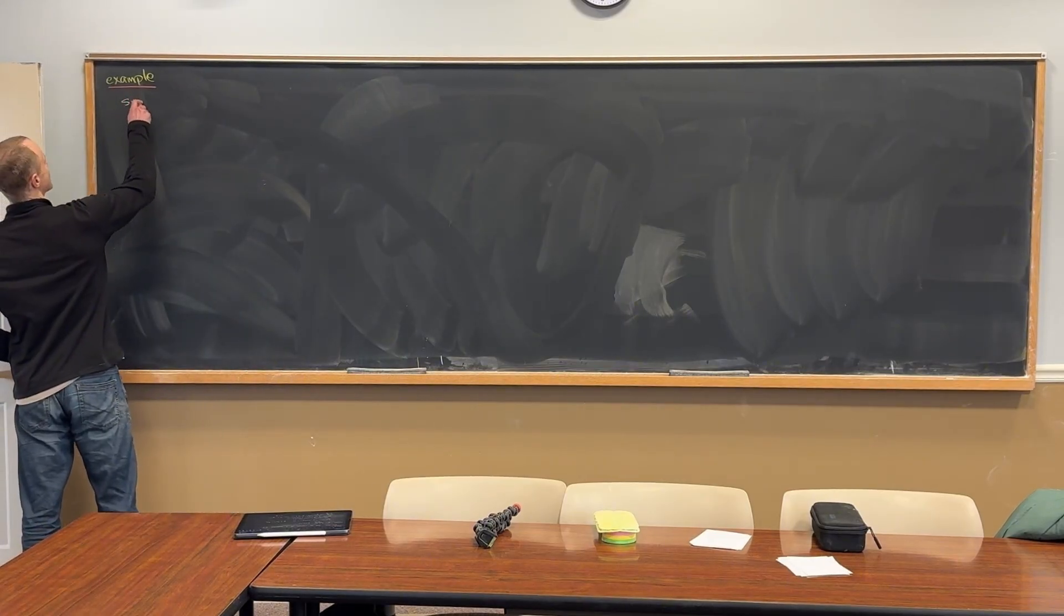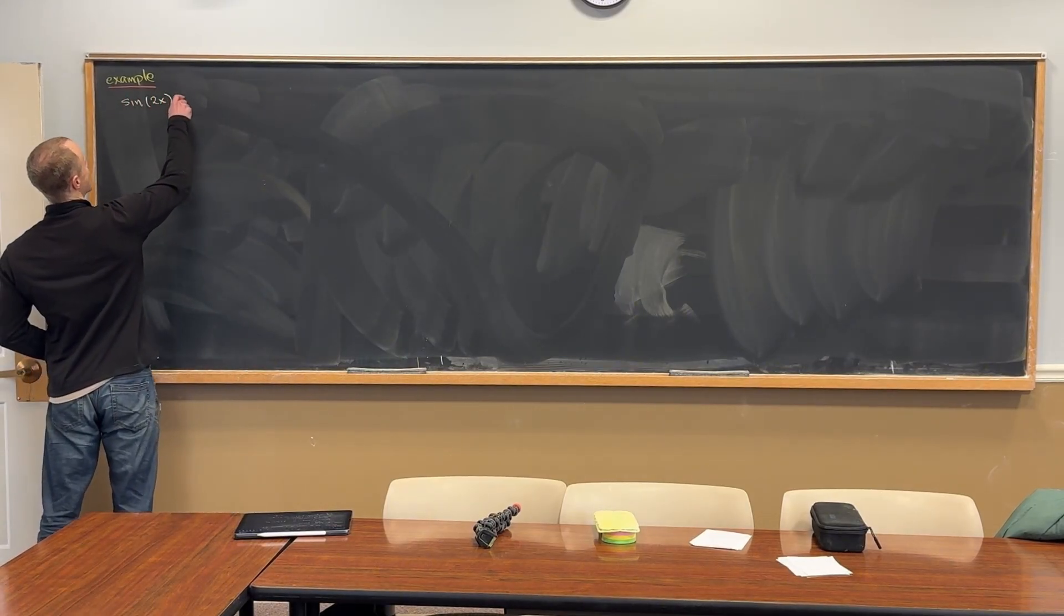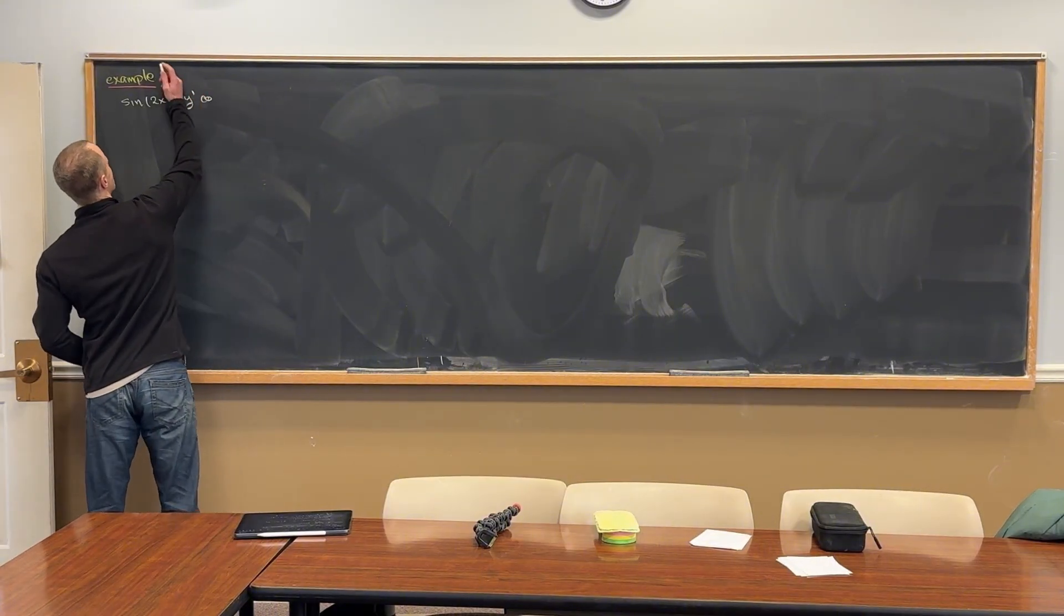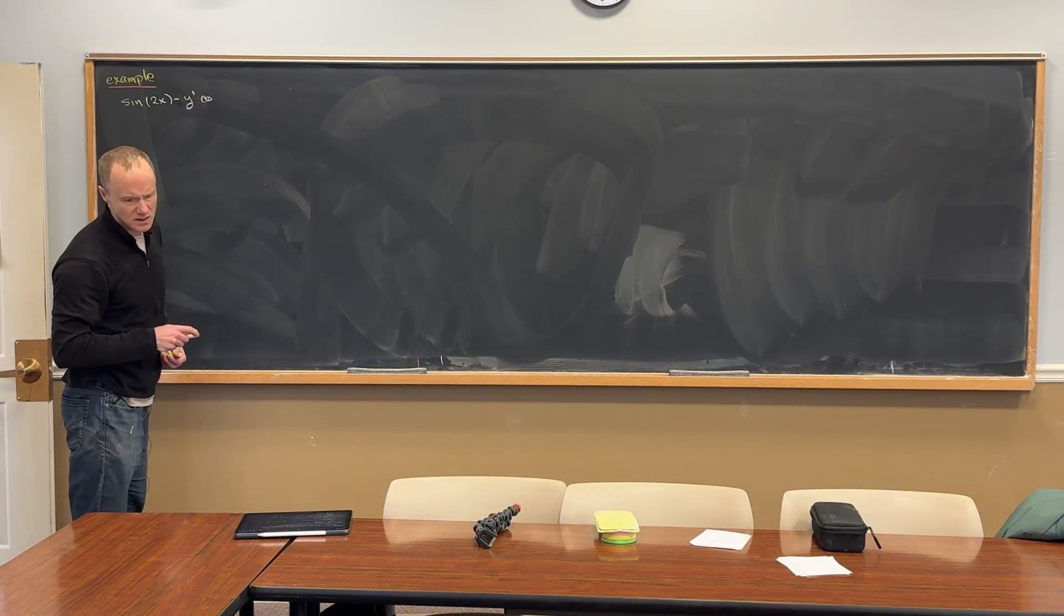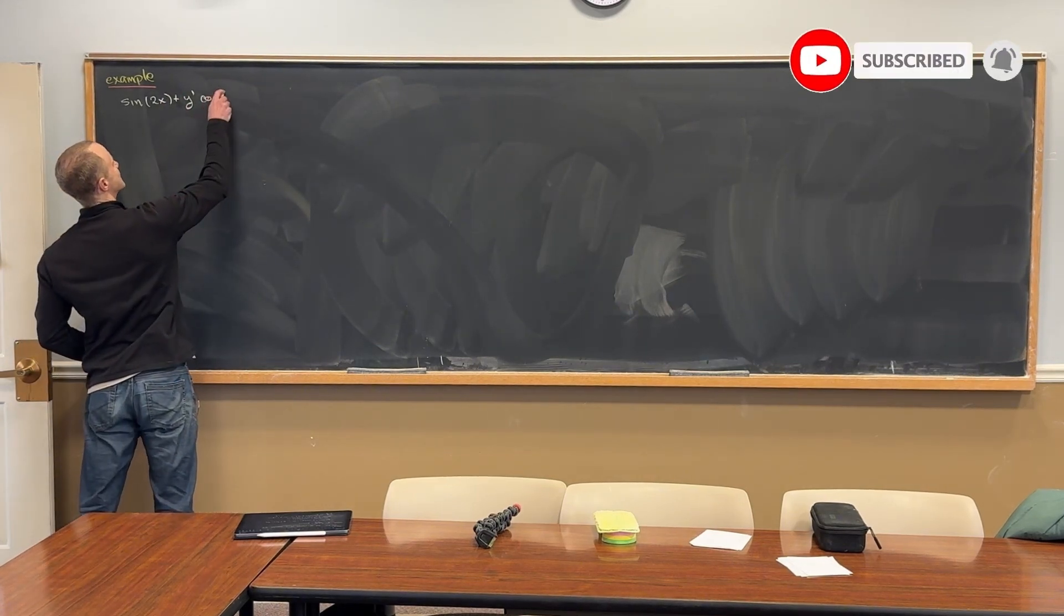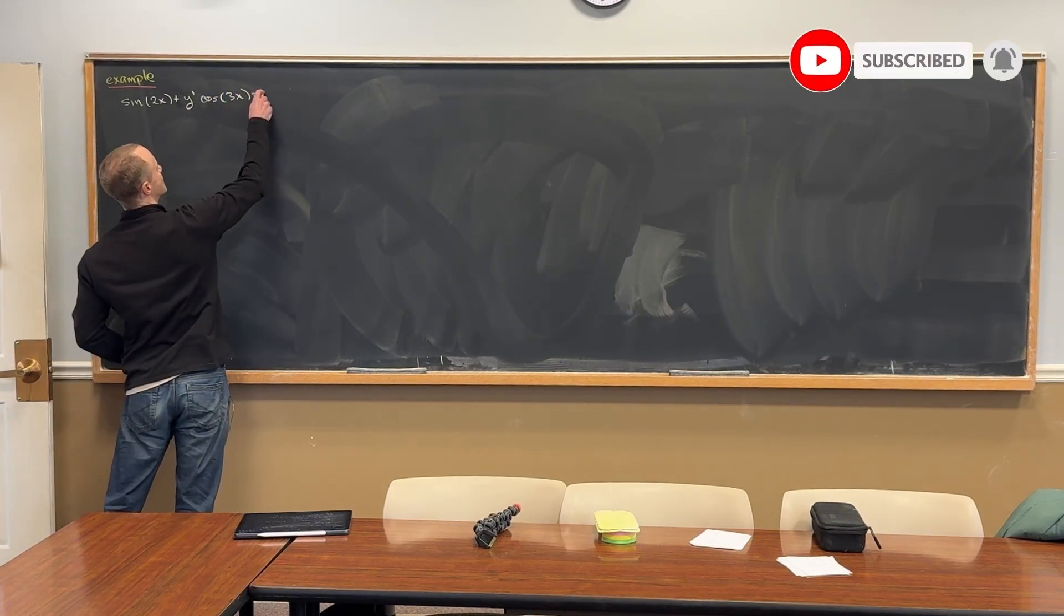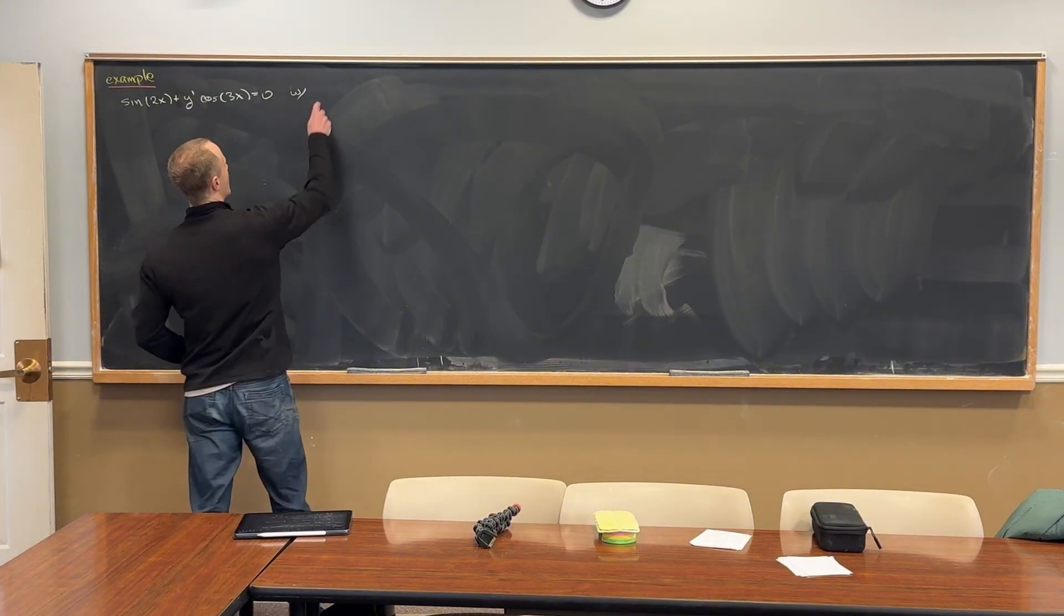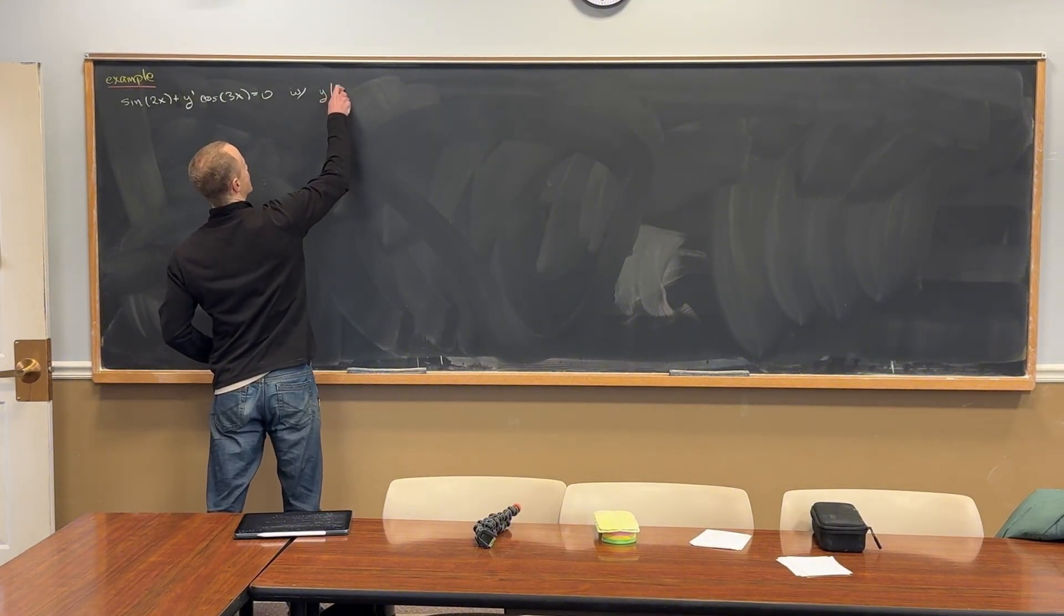Let's say we have this one first: sine of 2x plus y prime times, maybe plus y prime times the cosine of 3x equals 0, with y evaluated at pi over 2 is equal to pi over 3.